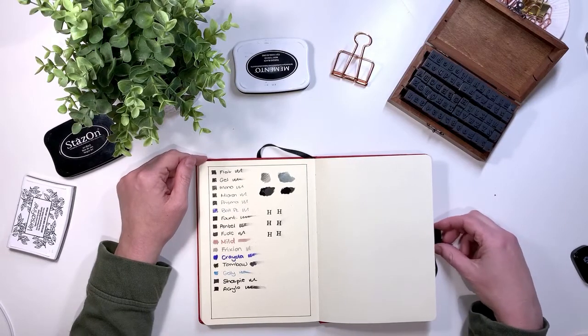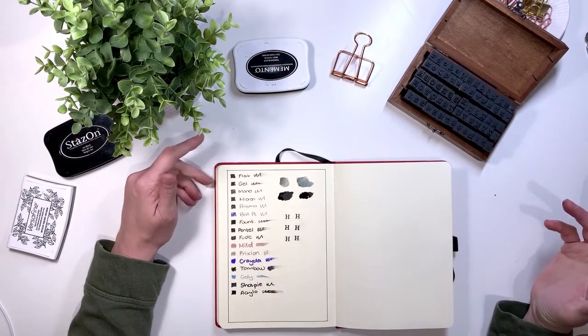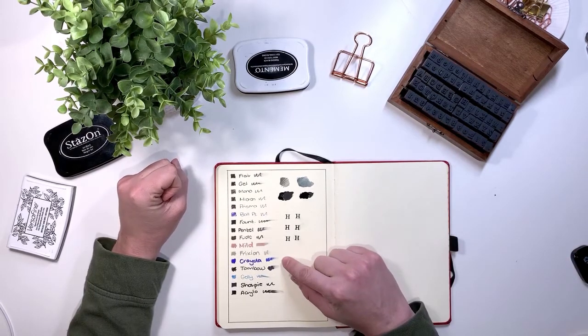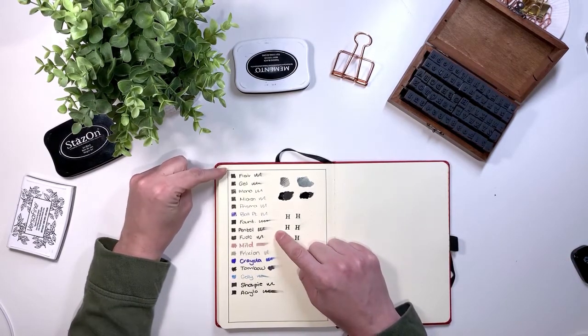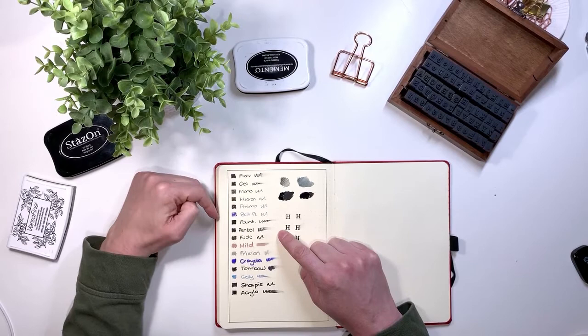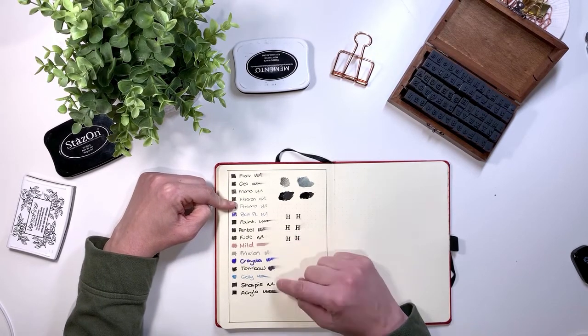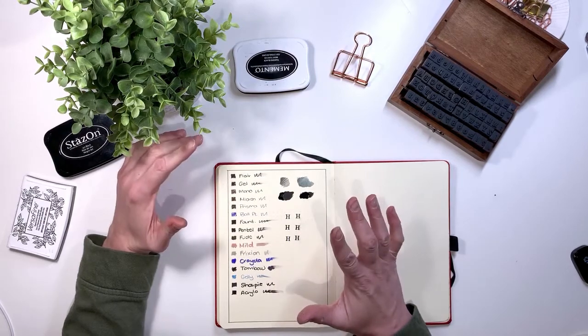Right away, I'm sure you can tell if you've been watching my channel, you know what my issues are with the coated paper. It smudges like no man's business. Everything smudged except the ballpoint pen and the Prisma and the Sharpie, but otherwise everything else smudged.